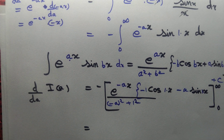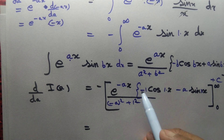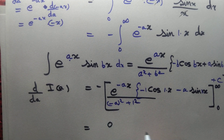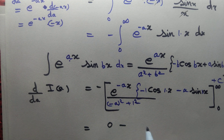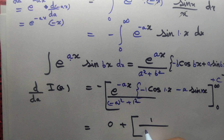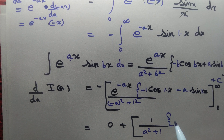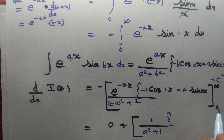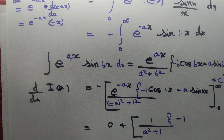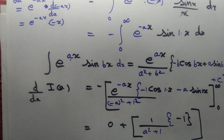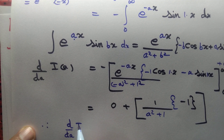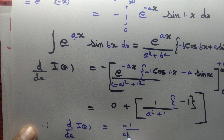Whenever we have infinity we write the limit. As x → ∞, e^(-ax) → 0, so the upper limit contributes 0. At x = 0: e^0 = 1, divided by (a² + 1), cos(0) = 1 so we get −1, and sin(0) = 0. Therefore d/da of I(a) = −1/(a² + 1).